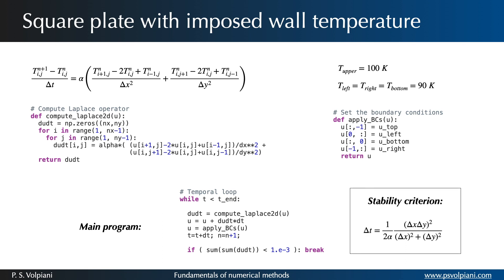It can be shown that the maximum time step delta T that we can allow without the process being unstable is this one.